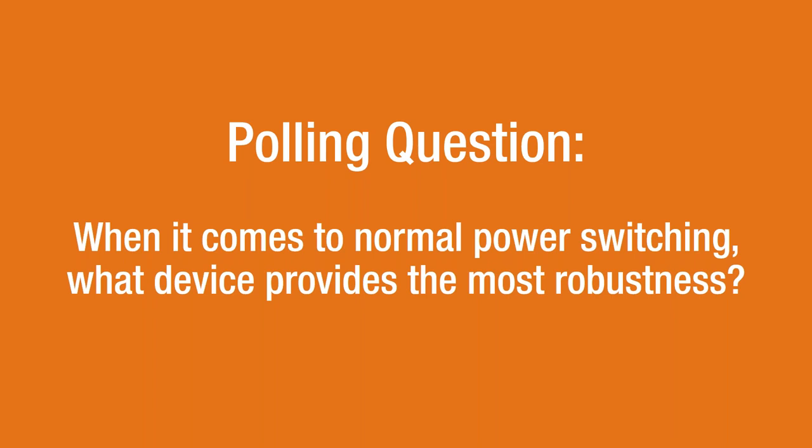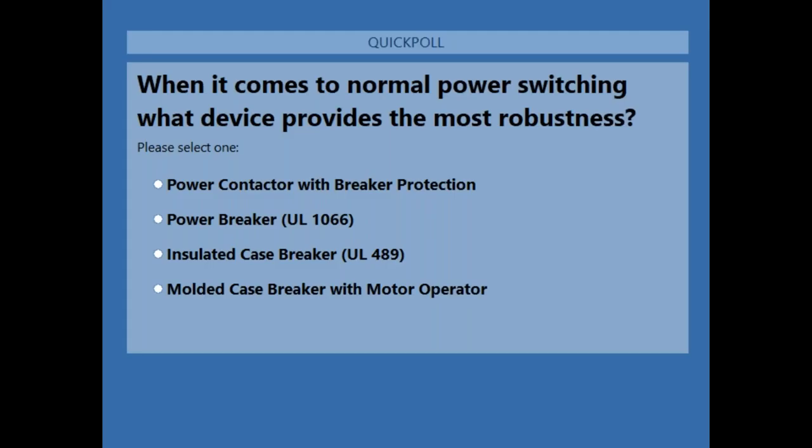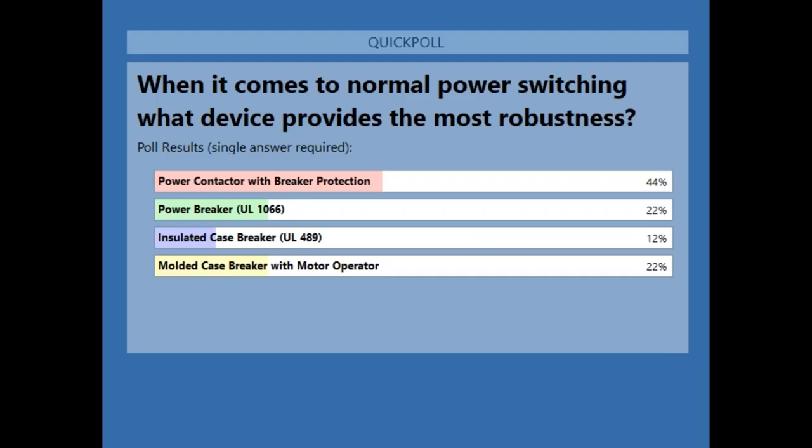Our first polling question: when it comes to normal power switching, what device provides the most robustness? Options are: power contactor with breaker protection, power breaker, insulated case breaker, or molded case breaker with motor operator. Most of you chose power contactor with breaker protection.